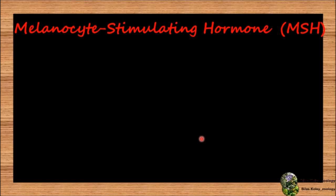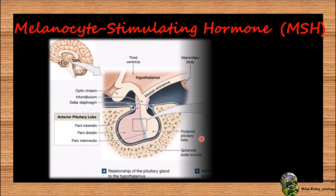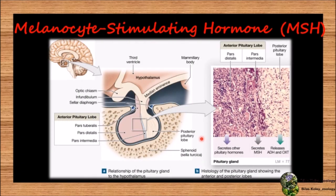Melanocyte stimulating hormone, that is MSH — it is polypeptide in nature. It controls the synthesis and dispersion of melanin granules in chromatophores, that is pigment cells, in the skin of fishes, amphibians, and some reptiles — that is poikilothermic animals. So it causes darkening of skin. But it is non-functional in humans.